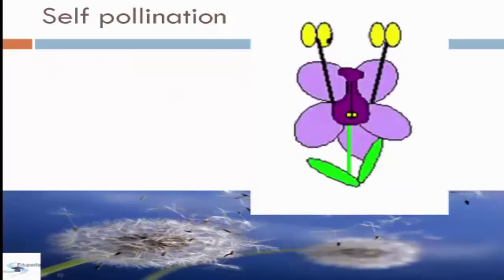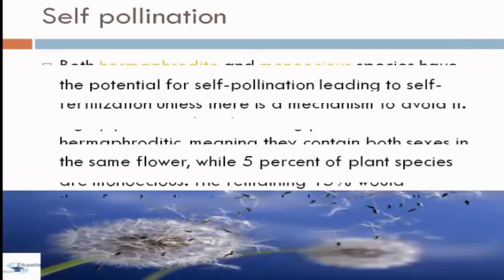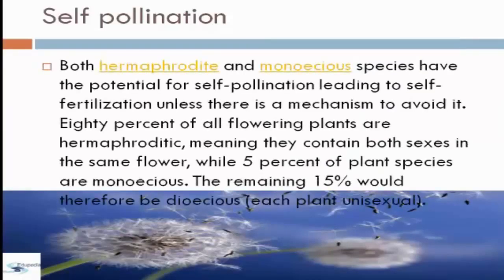As you can see in the picture, this shows self-pollination, where pollen travels down to the female part of the flower. Both hermaphrodite and monoecious species have the potential for self-pollination leading to self-fertilization unless there is a mechanism to avoid it. 80% of flowering plants are hermaphrodite, meaning they contain both sexes in the same flower, while 5% of plant species are monoecious; the remaining 15% would therefore be dioecious, with each plant being unisexual.